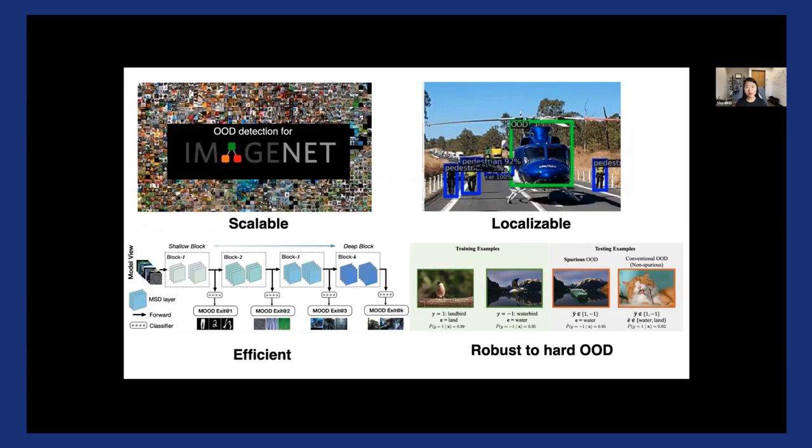The first is scalability. For example, a lot of these approaches have been commonly benchmarked on simple datasets, such as CIFAR, which has relatively lower resolution and fewer classes. But in the real world, we're going to be dealing with much higher resolution images with a lot more classes. And so how do we scale up OOD detection methods to this large-scale setting is a very important problem to work on.